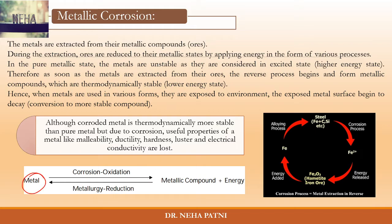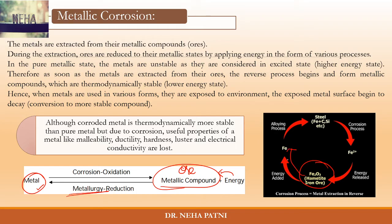Corrosion occurs basically when the metal is in the native state — meaning you have extracted the metal from the metallic compound, also called ore. When you are extracting the metal from the ore, you are supplying energy to it and you are getting the metal. This process is known as metallurgy. If you take an ore and want to extract iron from it, you have to add energy. When you add energy, the metal comes to a higher energy state.